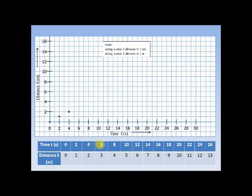And then, at time 6 seconds, distance covered is 3 meters, and when time is 8 seconds, distance covered is 4 meters, and at 10 seconds, it is 5 meters, and so on. We plot these points exactly at the intersections of the x-coordinate and y-coordinate, and then join these lines to get our graph. That is how we draw a distance-time graph.